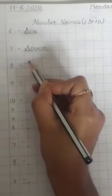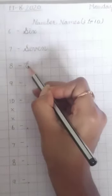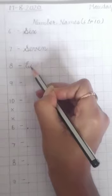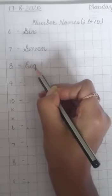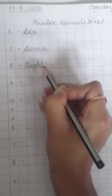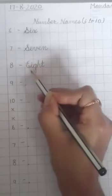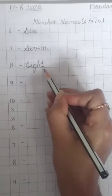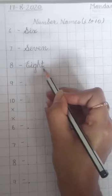Then leave a line, write number 8 here, put a small dash, now write capital E, then small I, G, H, T. E-I-G-H-T, eight.